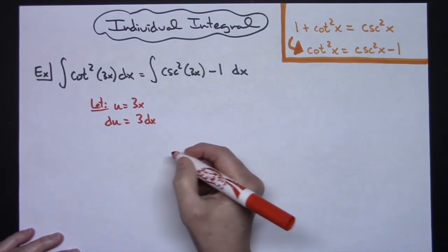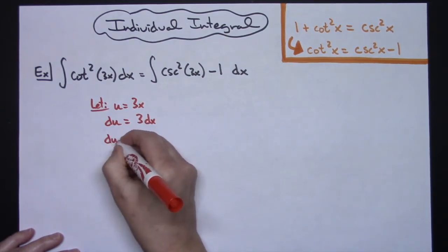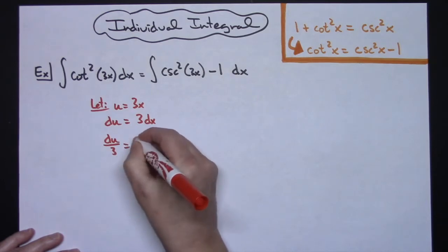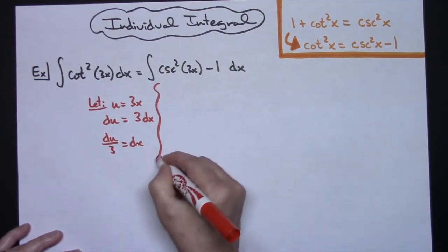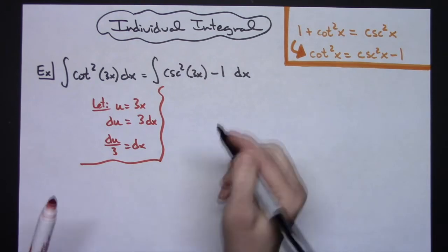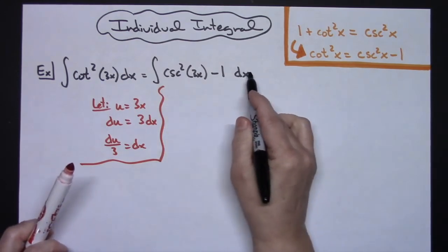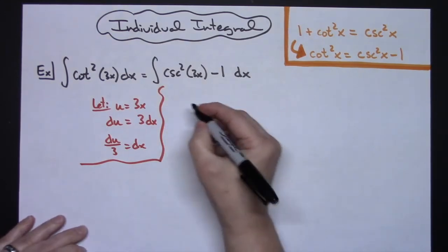I'm going to go ahead and solve all the way down for dx. So I'm going to have a du over 3 is equal to dx. Now from there I'm going to come back up to this original integral and I'm going to start making some substitutions.